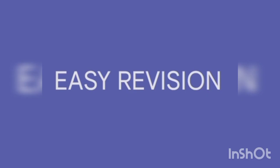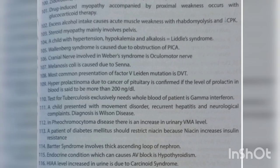Hello everyone, welcome to Easy Revision. Today let us read about medicine high-yield LMRPs and previous year's questions one-liners. Drug-induced myopathy accompanied by proximal weakness occurs with glucocorticoid therapy. Excess alcohol intake causes acute muscle weakness with rhabdomyolysis.